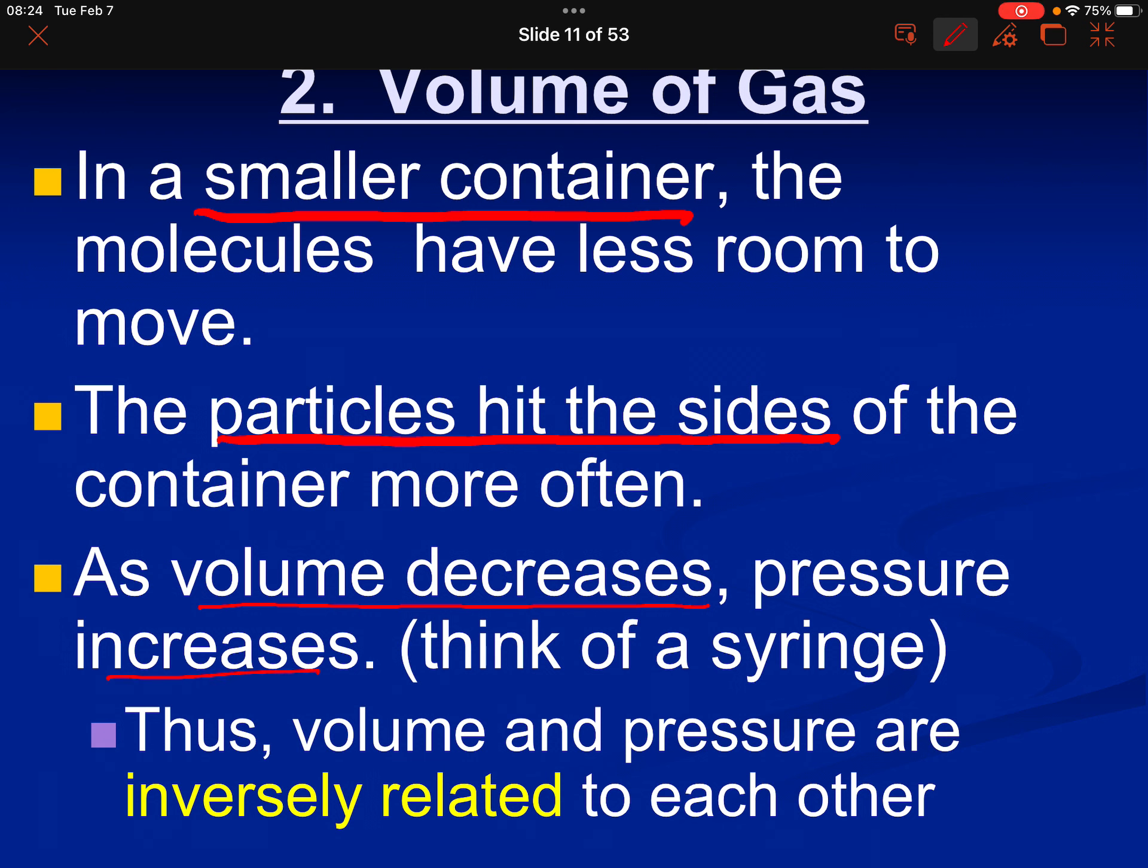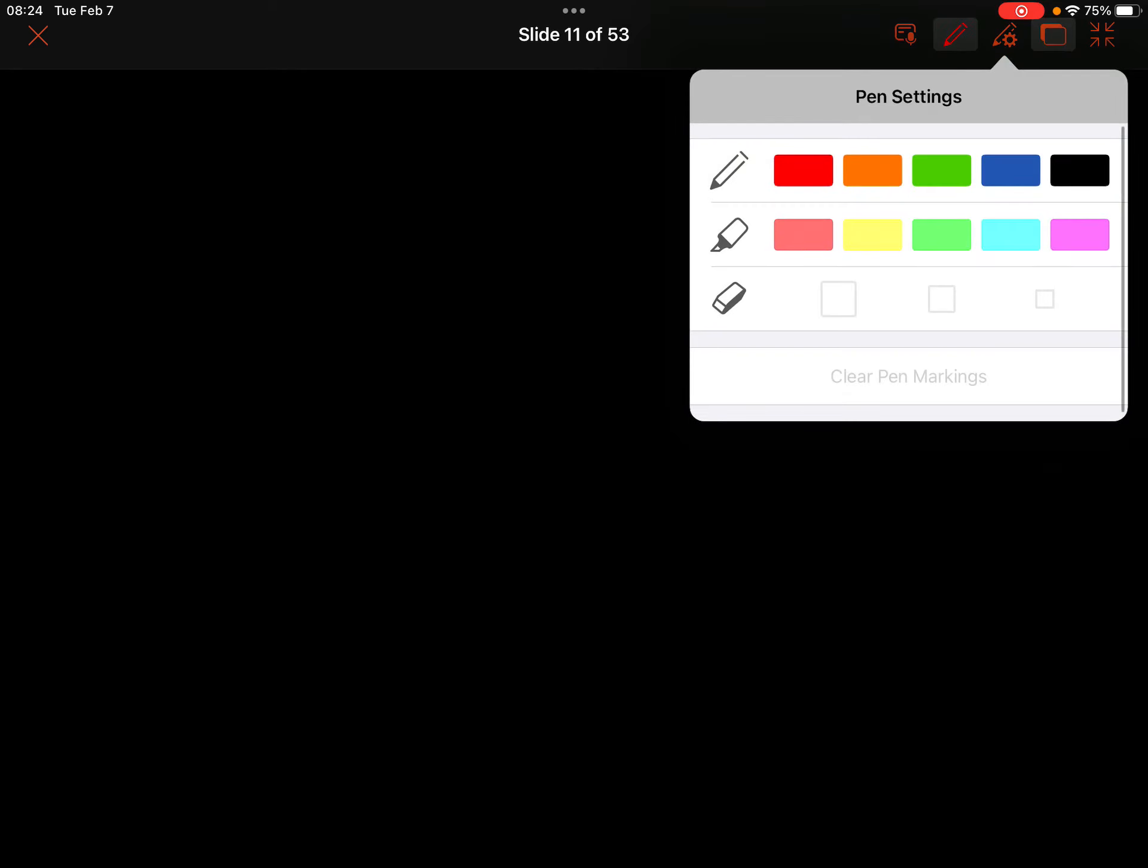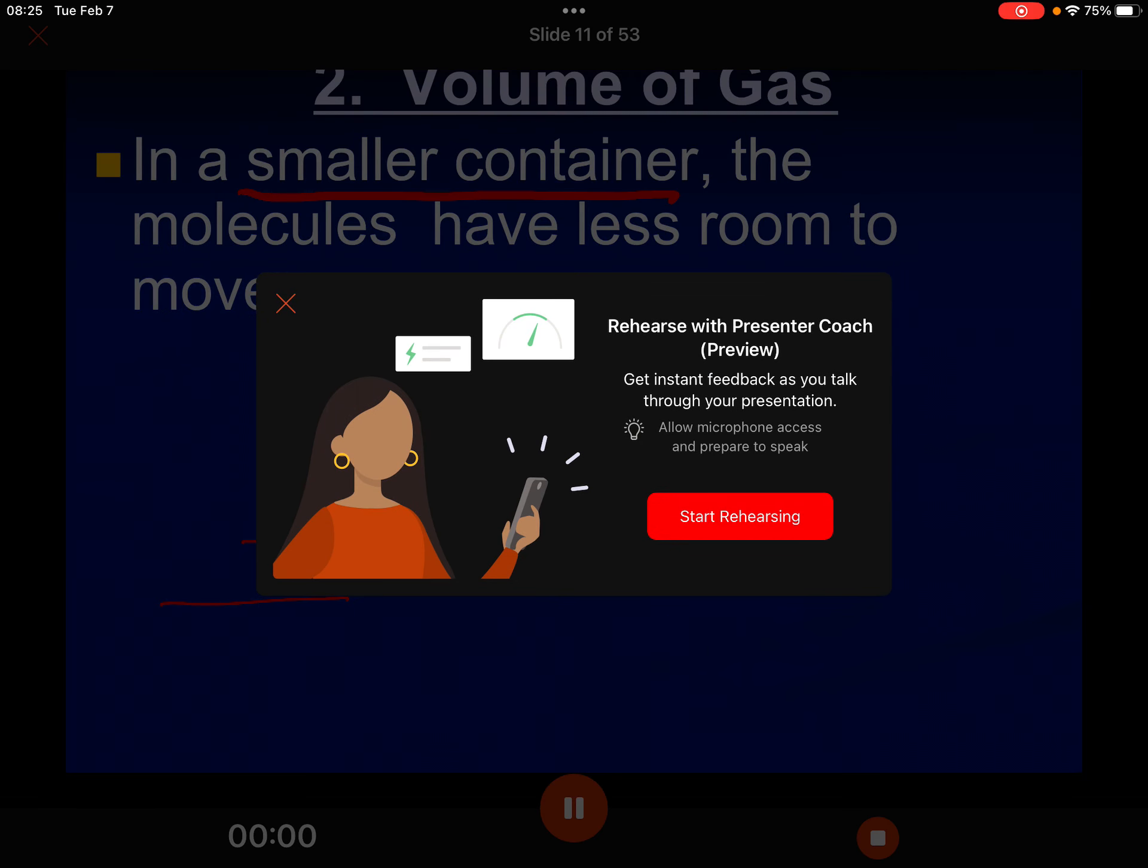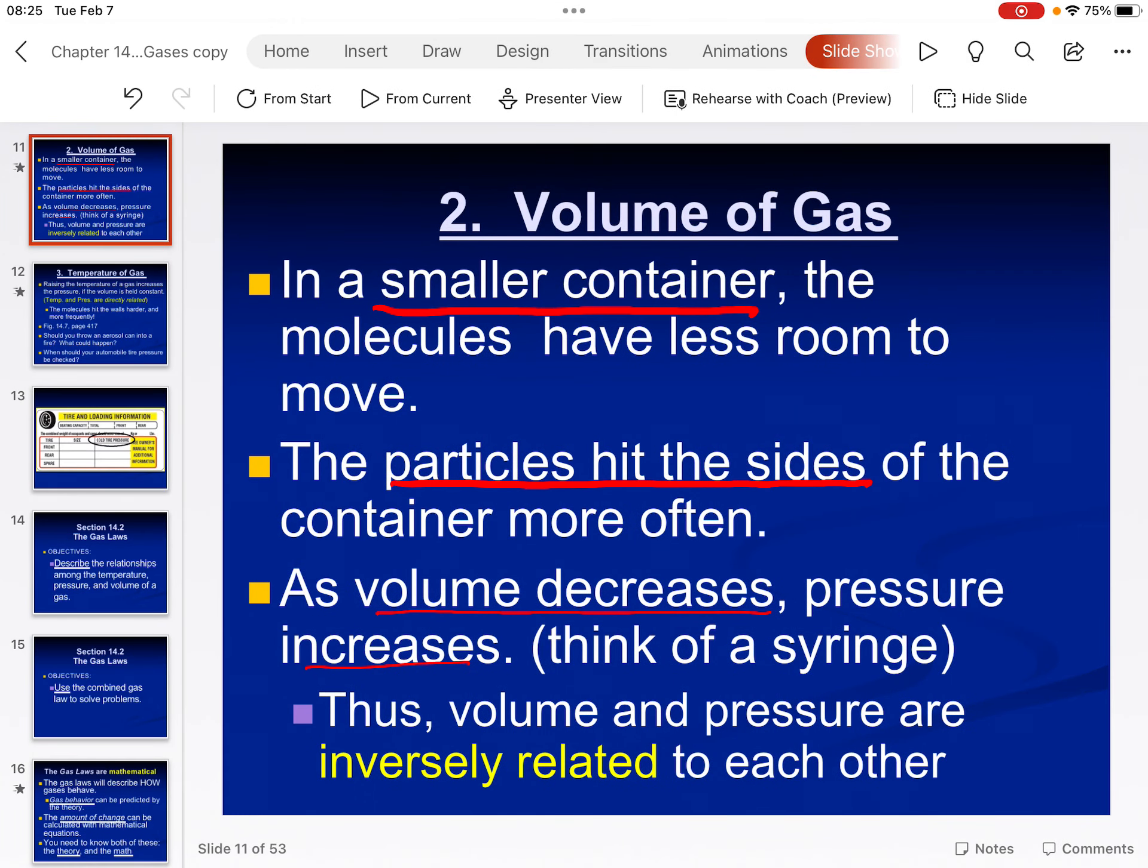Volume. If we have a smaller container, we have the same number of particles, but the particles have less room to move. If they have less room to move, they will hit the sides of the container more often. So as volume decreases, pressure increases. And they like to think of a syringe, and I'll try to draw a syringe right here. Here's a syringe with a plunger. So if I put my finger on this, if I hold this plunger down, I've got this volume, and if I move the volume to right here, if I move this to here, I've got the same number of particles, but they'll be hitting way more often.